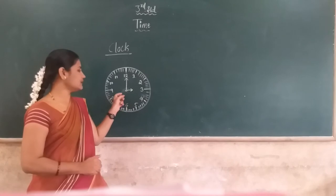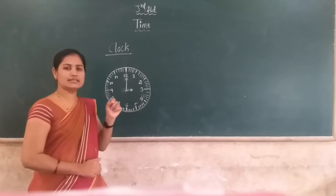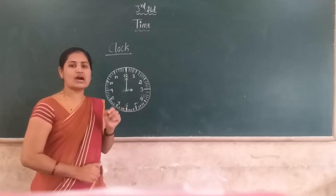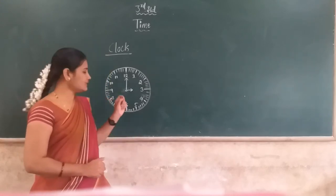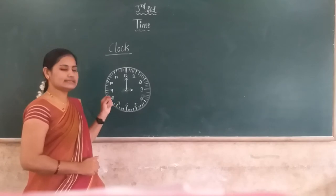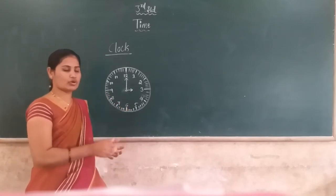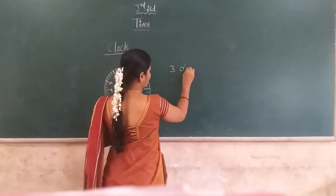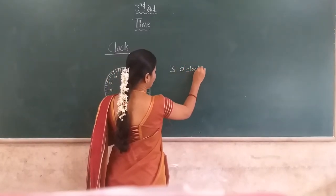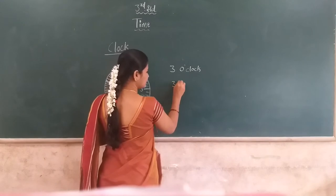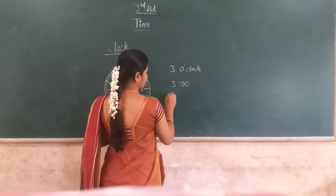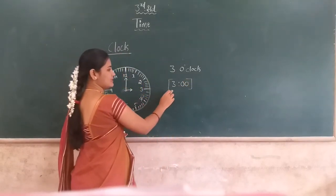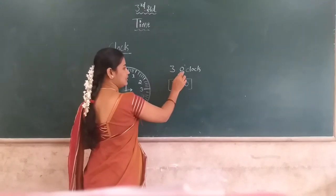The minute hand is exactly at 12 — it indicates the hour of the day. In this clock, the time is exactly 3 o'clock. How to read it? 3 o'clock. How to write it? Like this — 3 o'clock.